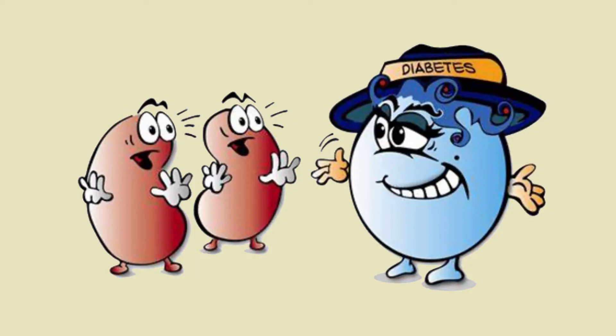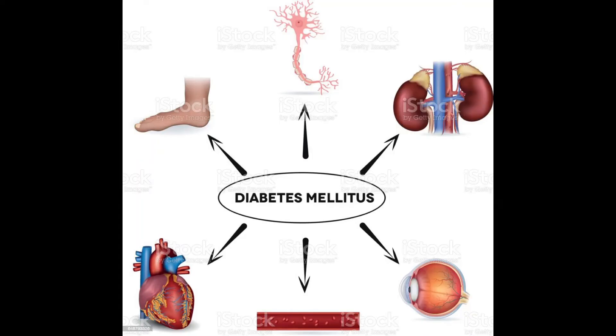Potentially reversible diabetes conditions include pre-diabetes and gestational diabetes. Pre-diabetes happens when blood sugar levels are higher than normal but not high enough to be called diabetes, and pre-diabetes can lead to diabetes unless steps are taken to prevent it. Gestational diabetes happens during pregnancy but may go away after the baby is born.